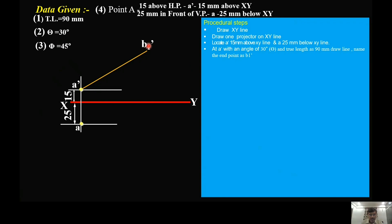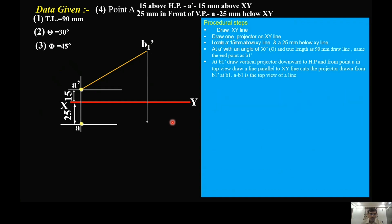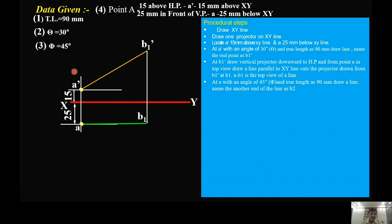At B1 dash, draw a projector vertically down towards the horizontal plane. Then at A, draw a line parallel to XY — this line is going to meet the projector at B1. This will be the top view of the line. It is a reduced length, whereas A dash B1 dash is the true length. The inclination of A dash B1 dash with HP is theta. Then, with A as center, 45 degrees as inclination, and true length of 90 mm, draw a line.